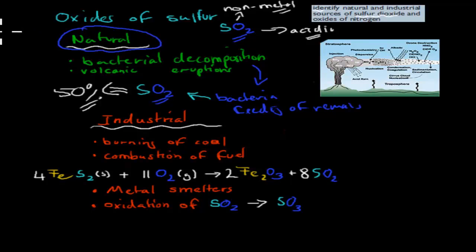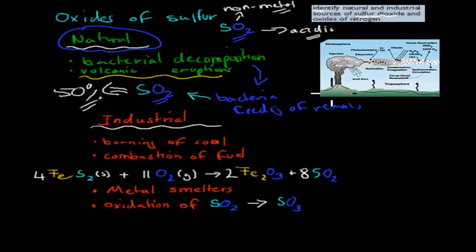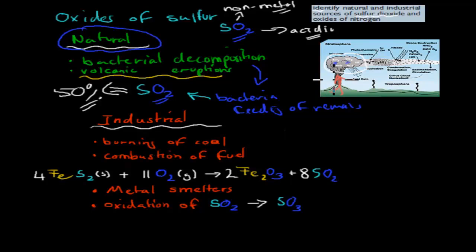Another way SO2 can naturally be produced is through volcanic eruptions. Looking at the picture of a volcanic eruption, we have ash coming up, and most of that ash is made up of different compounds. The most important ones for us are SO2 — sulfur dioxide — and CO2 — carbon dioxide. So these are both pollutants that can occur naturally through volcanic eruptions. Those were the two natural sources of sulfur dioxide.